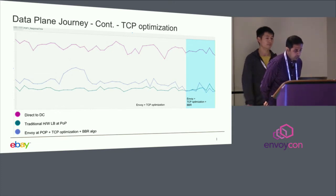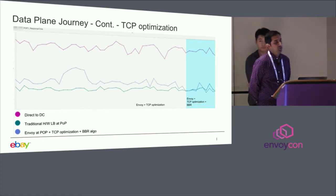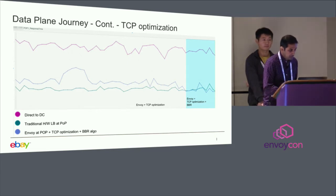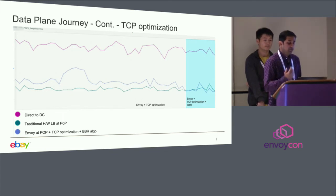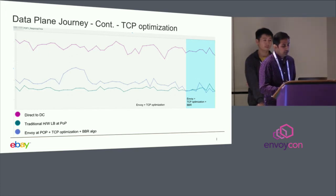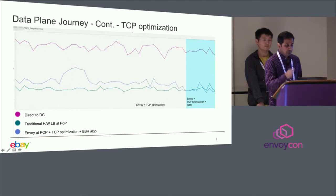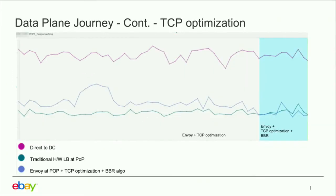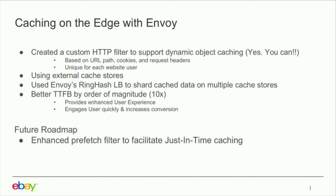If you see the top line, that's the response time when traffic terminates directly at the data center from all over the world. The middle line is pretty much equivalent to the hardware LB running at the POP. We didn't want to just match the hardware — we wanted to beat it. With Envoy plus our TCP and BBR optimizations, the blue line shows we are now clearly beating the numbers any hardware LB could provide.